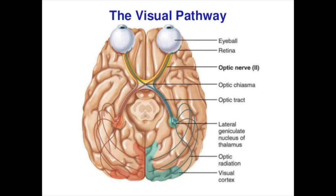The paired optic tracts sweep posteriorly around the hypothalamus and send most of their axons to synapse with neurons in the lateral geniculate nuclei of the thalamus, which maintains the fiber separation established in the chiasma and combines the retinal input for delivery to the visual cortex. Axons of these thalamic neurons project through the internal capsule to form the optic radiation, projecting to the primary visual cortex in the occipital lobes where conscious perception of visual images occurs. Some nerve fibers in the optic tracts send branches to the midbrain — one set ends in the superior colliculi, visual reflex centers controlling the extrinsic muscles of the eyes; another set comes from a subset of ganglion cells that respond directly to light and function as the timer to set our daily biorhythms.